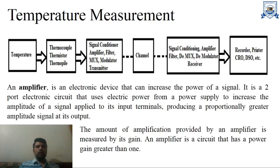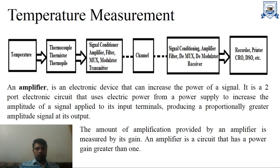Here is the block diagram. First, our measurement is temperature. Our sensor may be thermocouple, thermistor, or thermopile. The selection of thermocouple, thermistor, or thermopile is based on the range of temperature. Temperature may be in the range of 0 to 100 degree Celsius, below 0 degree Celsius, or up to 1000 degree Celsius. When we have to measure large temperatures, we use pyrometers. So it is all about the selection of sensor.